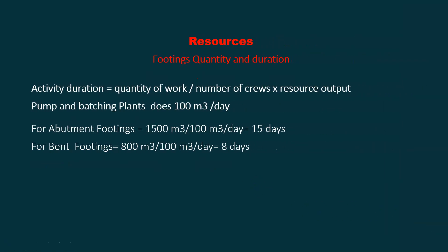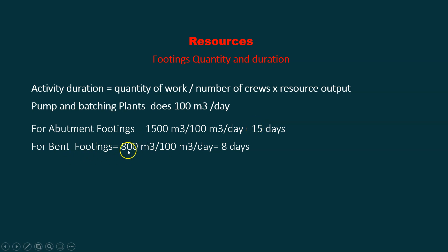For the footing, if you have a pump and batching plant that can produce 100 cubic meters of concrete a day, and your abutment footing is 1500 cubic meters divided by 100 — the productivity — it will give you 15 days. For the bent, 800 cubic meters divided by 100 gives me 8 days.